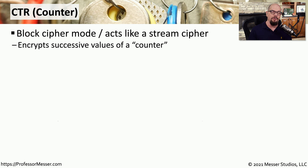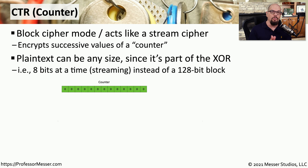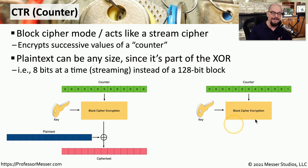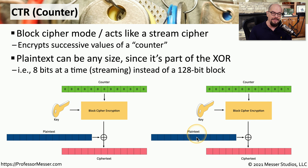Another common type of block cipher mode is the Counter mode, or CTR. Counter mode uses an incremental counter to add randomization to the encryption process. We start with the incremental counter, encrypt that counter with the block cipher encryption, and then perform an exclusive OR with the plaintext to finally create the ciphertext. Instead of using the results of this encryption on the next block, we simply increment the counter and then perform exactly the same encryption with the next block of plaintext to create the next set of ciphertext.